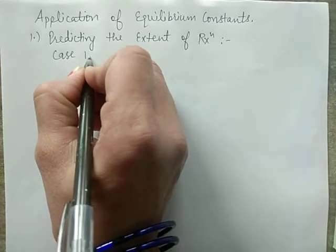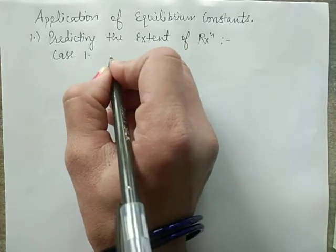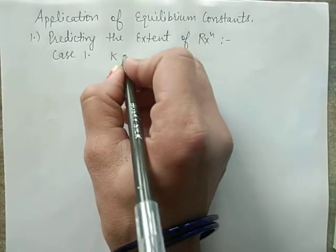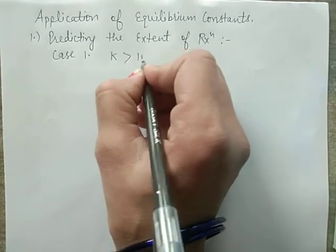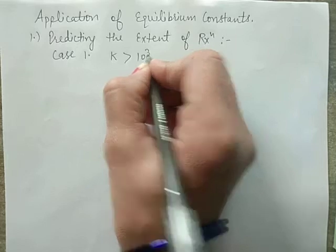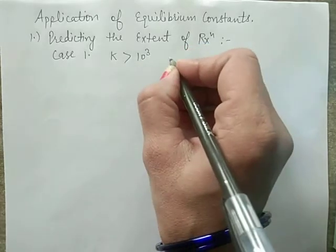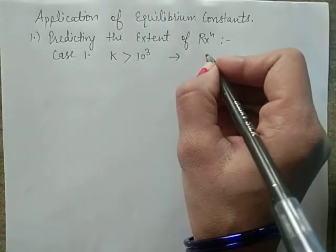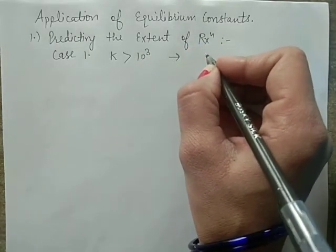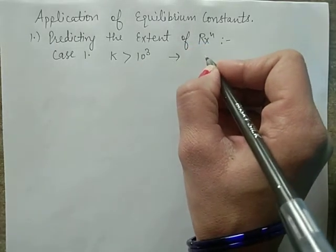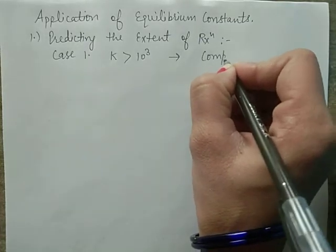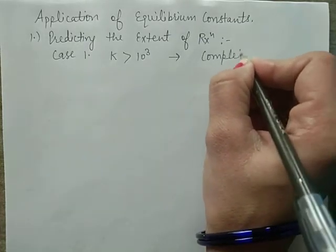Case number 1: If K value is greater than 10³, it means this reaction will go to nearly completion — means a complete reaction.